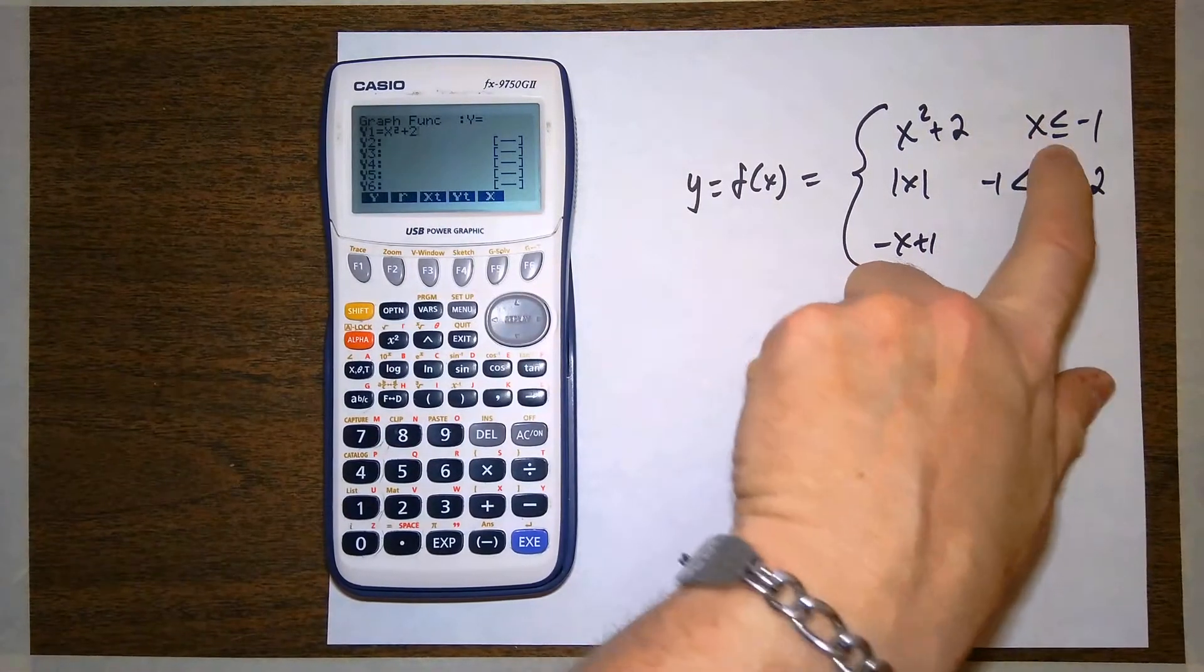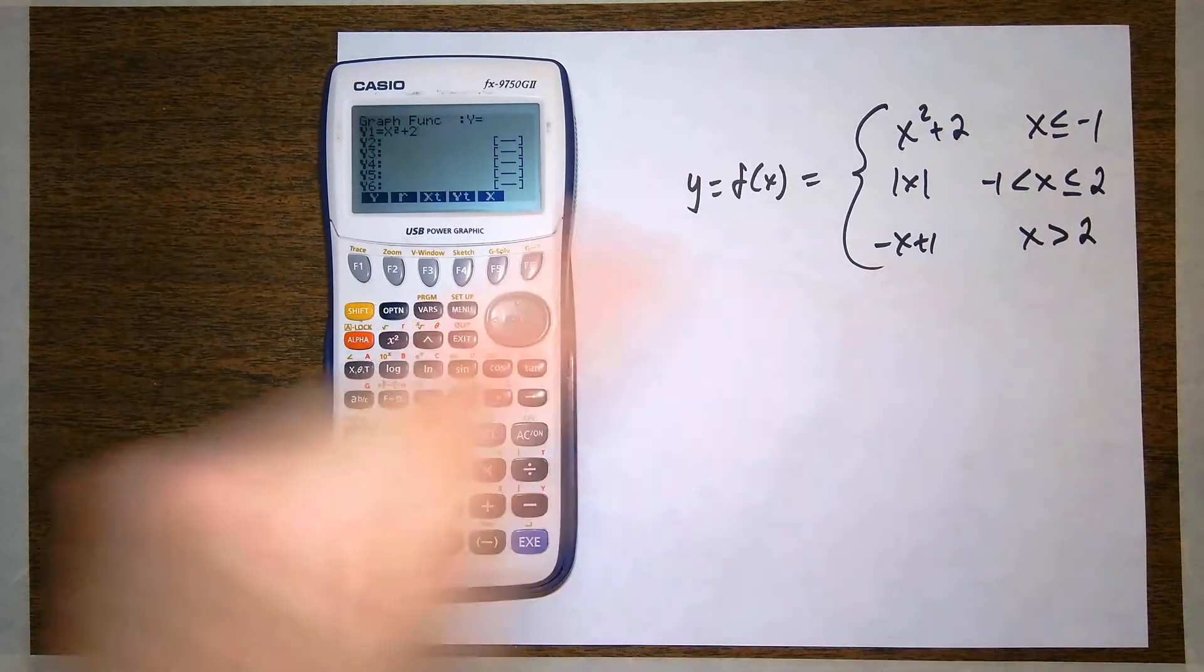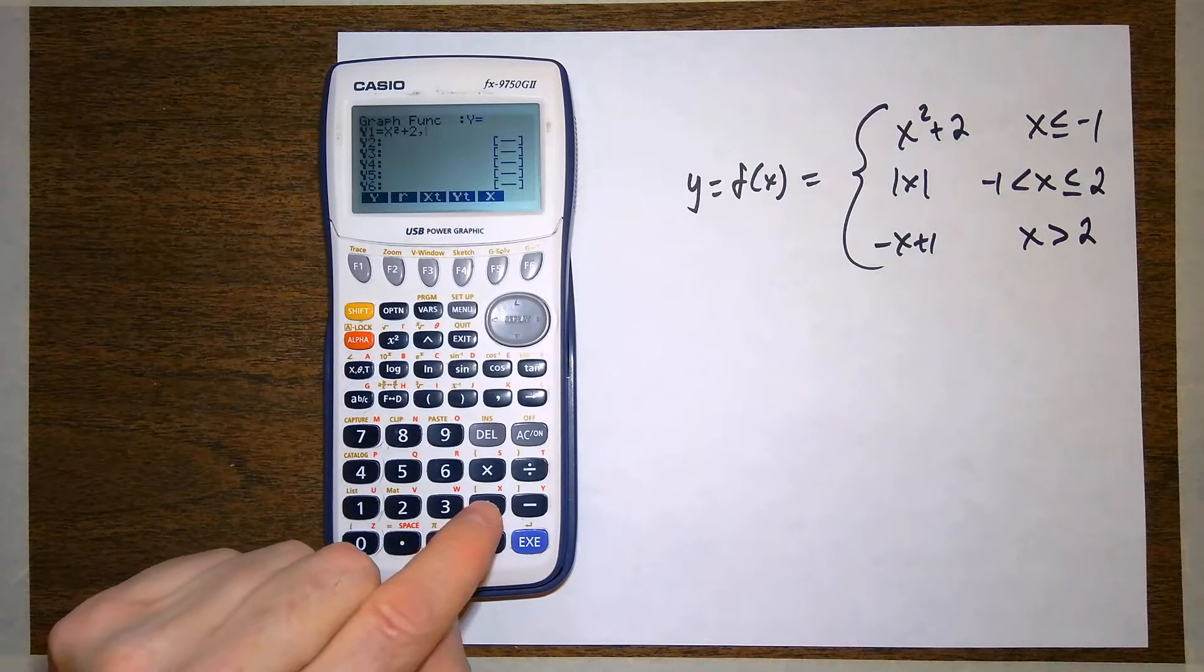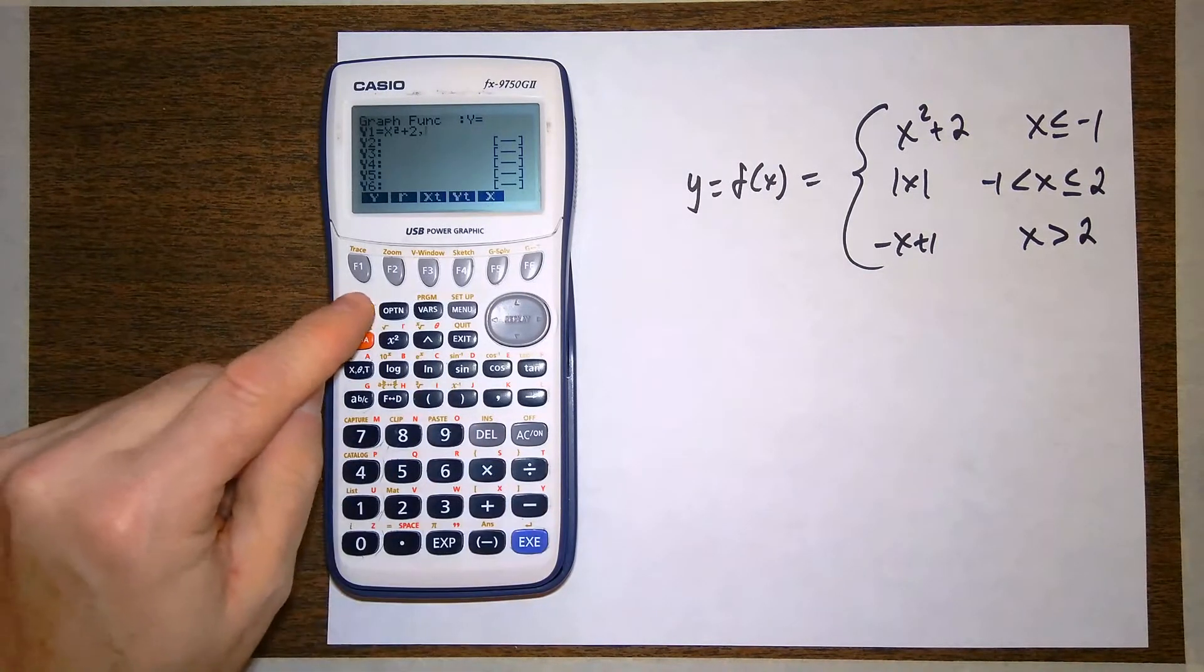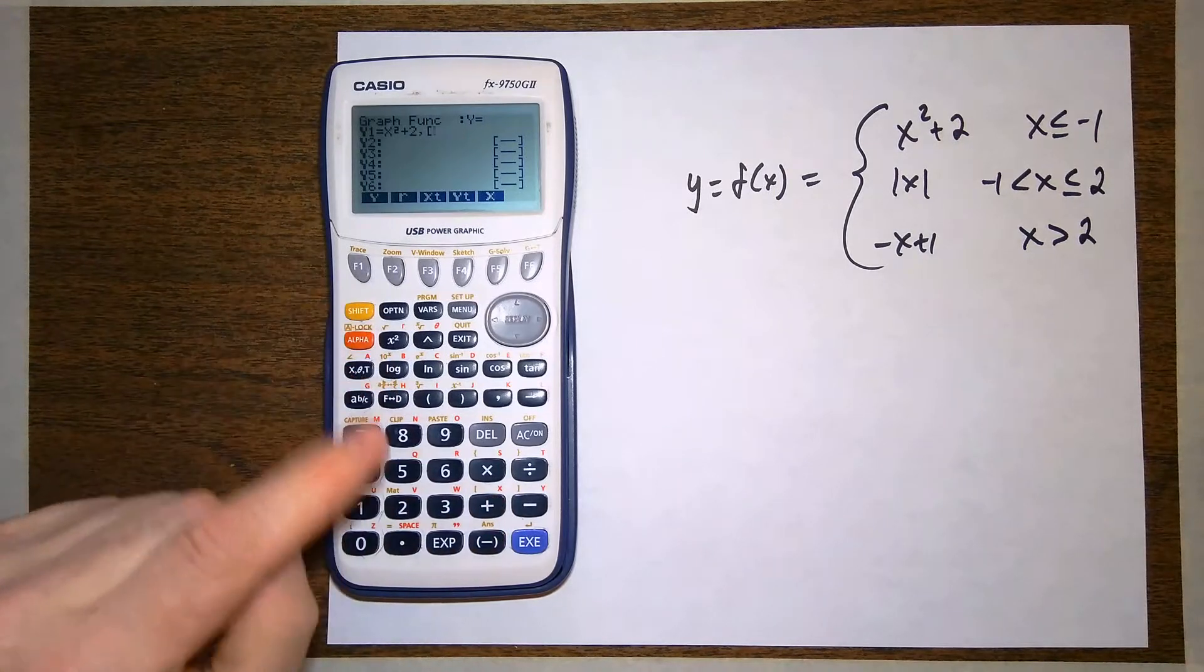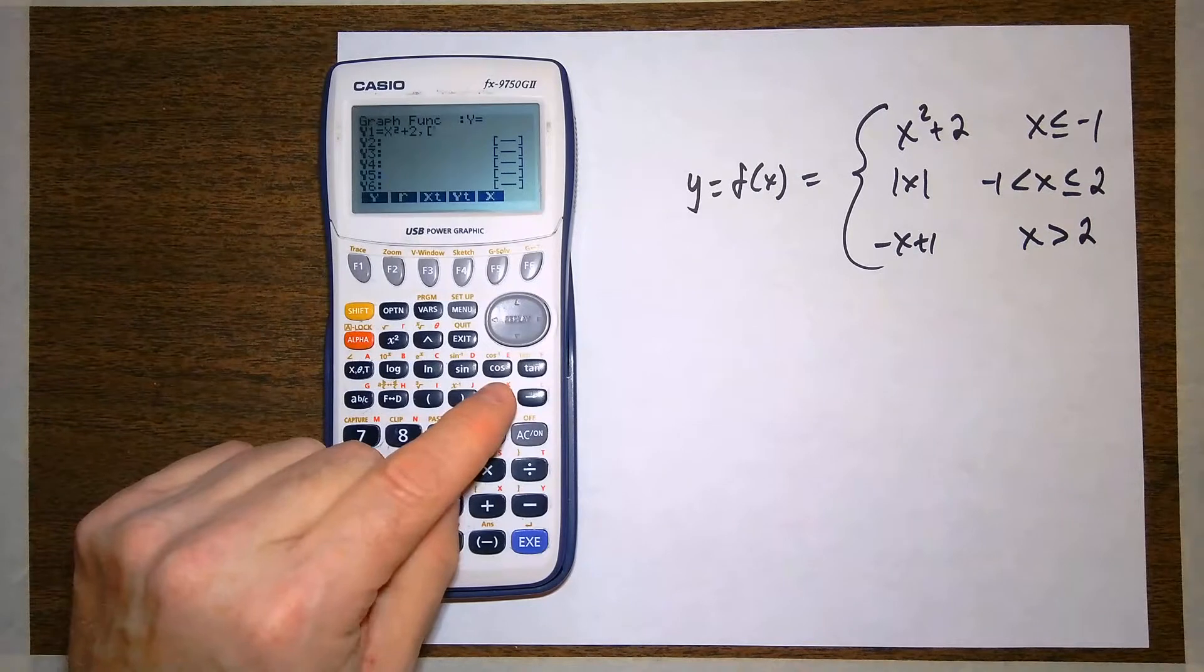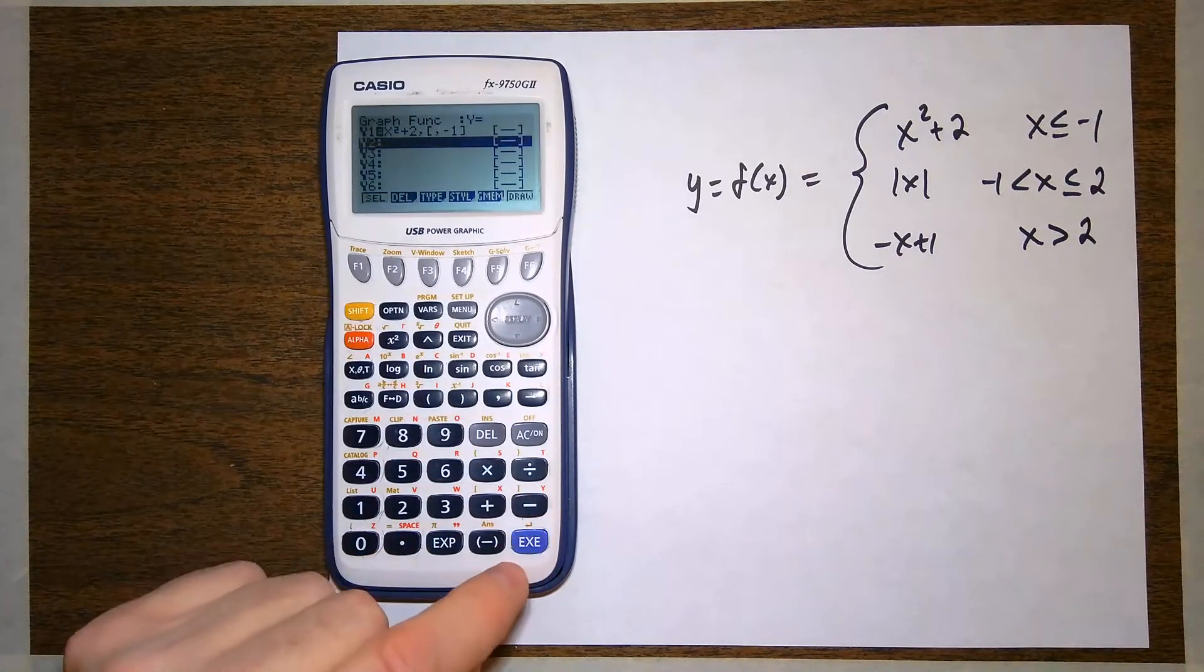Now I have to tell it that I only want to graph this part for this piece, when x is less than or equal to negative 1. So I'm going to put in a comma, and then I'm going to use the brackets, the shift plus and the shift minus. Shift plus to open it, and I want to do from negative infinity, so I'm not going to put any number there. Comma, negative 1, and then shift minus to close it.